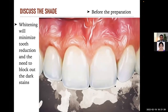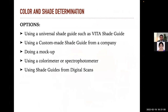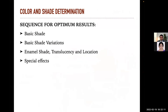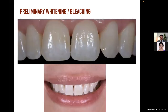Teeth whitening will minimize tooth reduction and the need to block out dark stains. For color and shade determination, you have various options: using universal shade guides such as the Vita shade guide, using custom-made shade guides from a company, doing a mockup, using a colorimeter or spectrophotometer, or using shade guides from digital scans. The sequence for optimum results includes basic shade, basic shade variations, enamel shade, translucency, location, and special effects. Primary whitening or bleaching of stained teeth before veneer placement will improve the final results. You should consider full-mouth whitening to minimize contrast if lighter shades are part of the patient's goal.